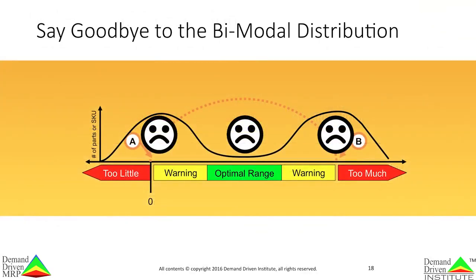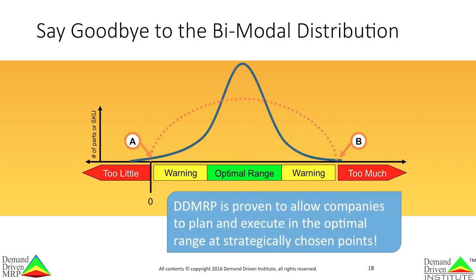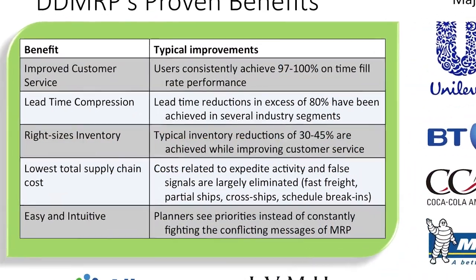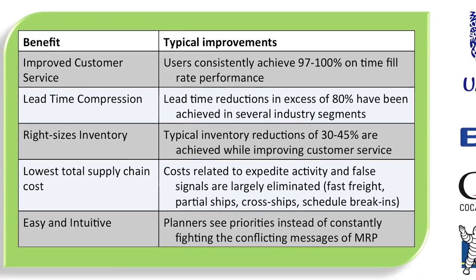And what about that bimodal distribution? Well, you can say goodbye to it. DDMRP is proven to allow companies to plan and execute in the optimal range at strategically chosen points. That means flow is protected and promoted. The typical benefits of DDMRP are compelling. Users consistently achieve 97% to 100% on-time fill rate performance. Lead time reductions in excess of 80% have been achieved in several industry segments. Typical inventory reductions of 30% to 45% are achieved while improving customer service. Costs related to expedited activity and false signals are largely eliminated. Planners have relevant information — they see priorities instead of constantly fighting the conflicting messages of MRP.